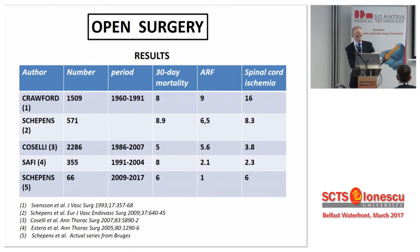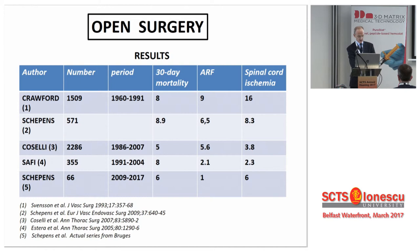For high-risk patients, the so-called hybrid technique has been described. Also for patients with a so-called hostile thorax, patients with limited cardiac and/or respiratory reserve, or patients with previous extensive aortic surgery. In hybrid repair or debranching repair, which is a combination of open and endovascular treatment, visceral branches of the aorta are debranched depending on the patient's anatomy. The abdominal aorta or the common iliac arteries are often used as new inflow sources prior to the endovascular exclusion of the TAAA.